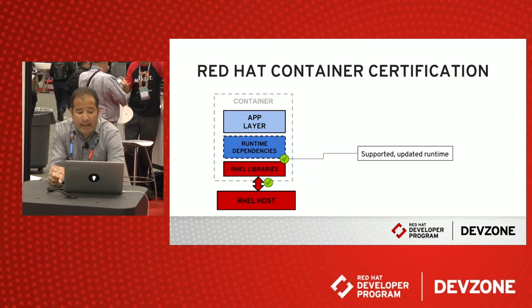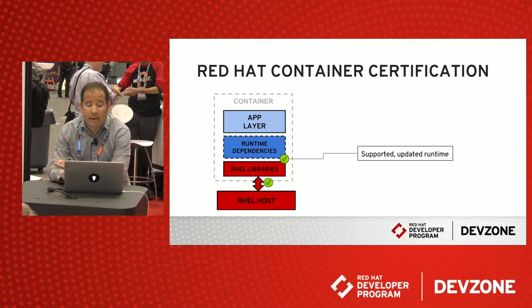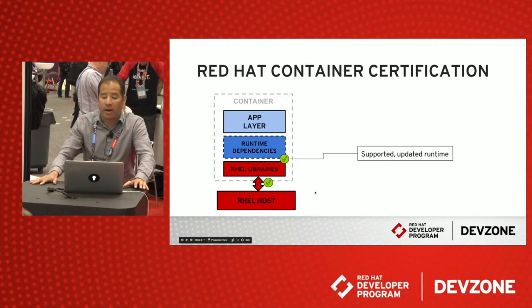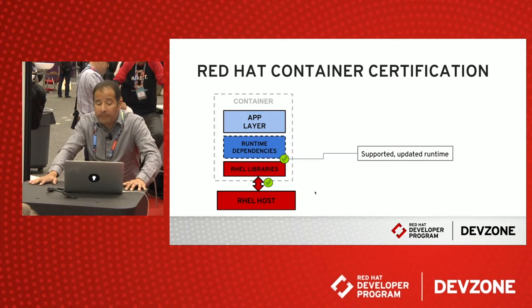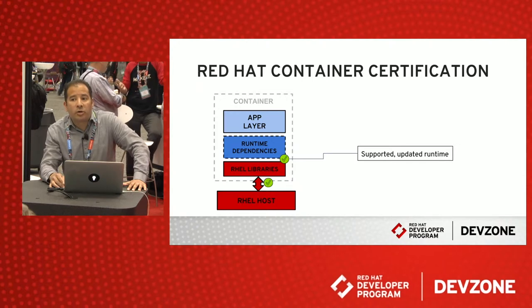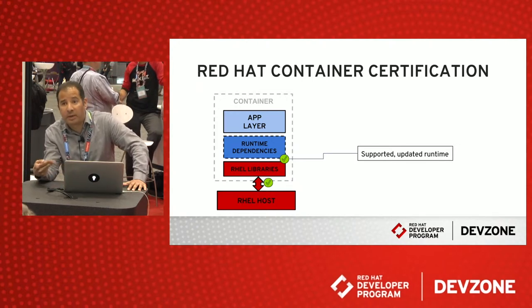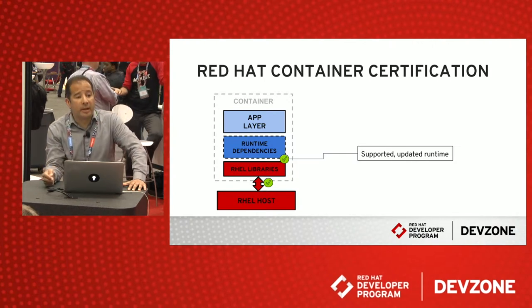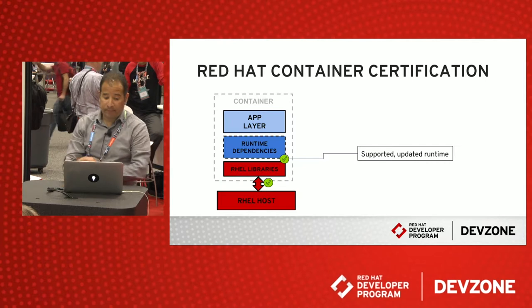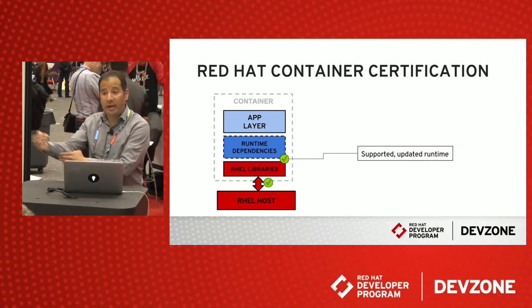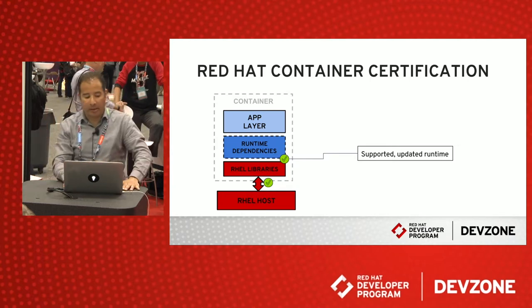The other thing we check for is that the libraries included from the operating system, as well as possibly other dependencies coming from Red Hat, are both supported and up-to-date. We know and monitor all of the potential vulnerabilities that can go into the operating system libraries, so we can detect when a container needs to be updated and notify the vendor to do so. The last thing you want as an application provider is for your container to be a vector for risk into your customers, so we help by doing those checks.